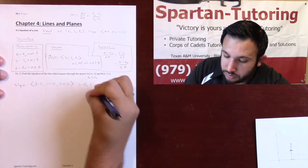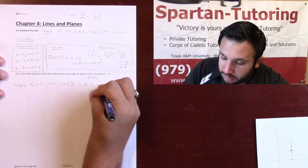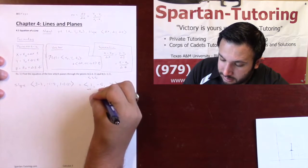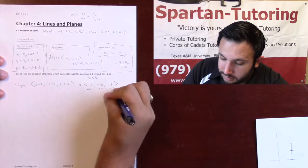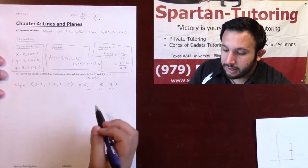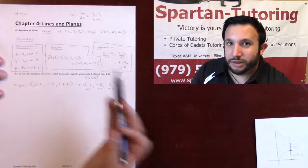Which, our slope's going to be 1, negative 5, 4. And this is your delta x, delta y, and delta z. Now that you have your point and now that I have my slope, it's plug and chug after that.